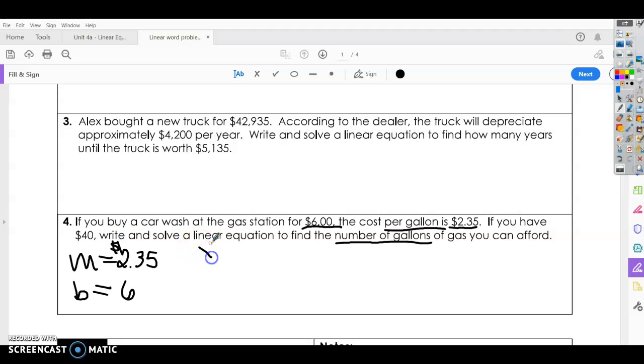So we're still using slope-intercept form. So y equals mx plus b, where in this case our slope is our amount for a gallon of gas, $2.35 per gallon, x will be the number of gallons, and then $6 is what we're starting with.